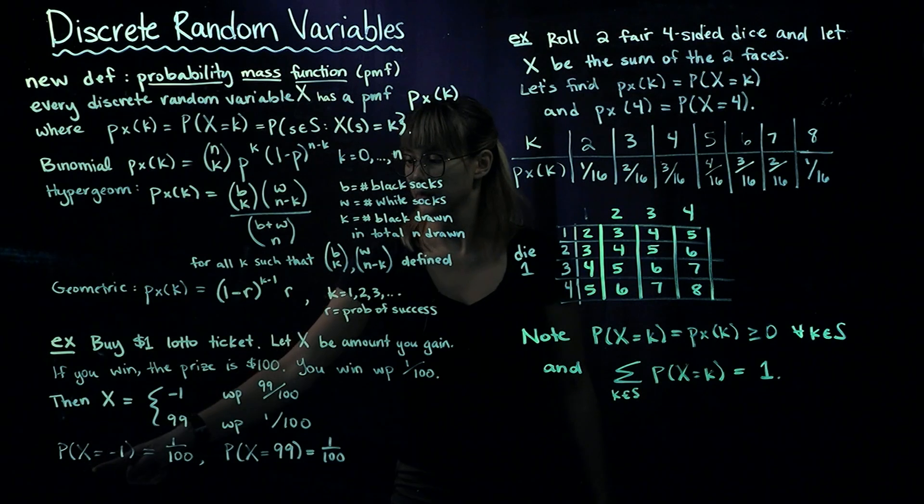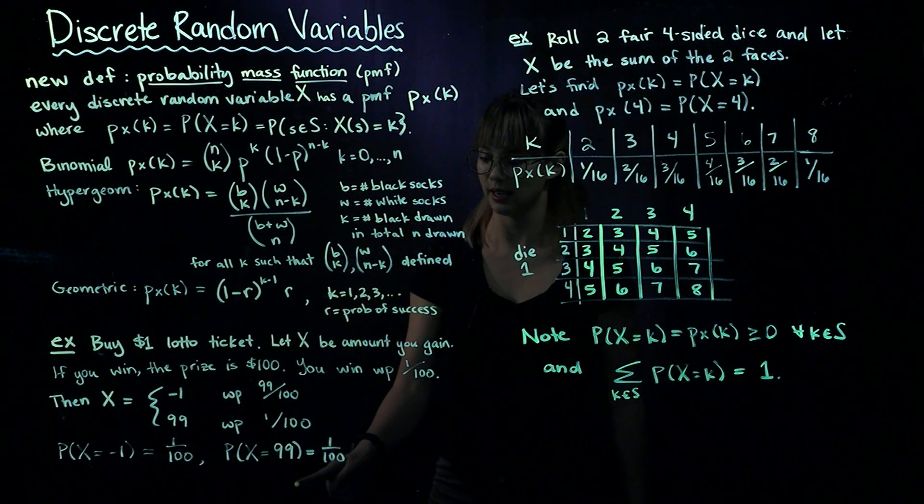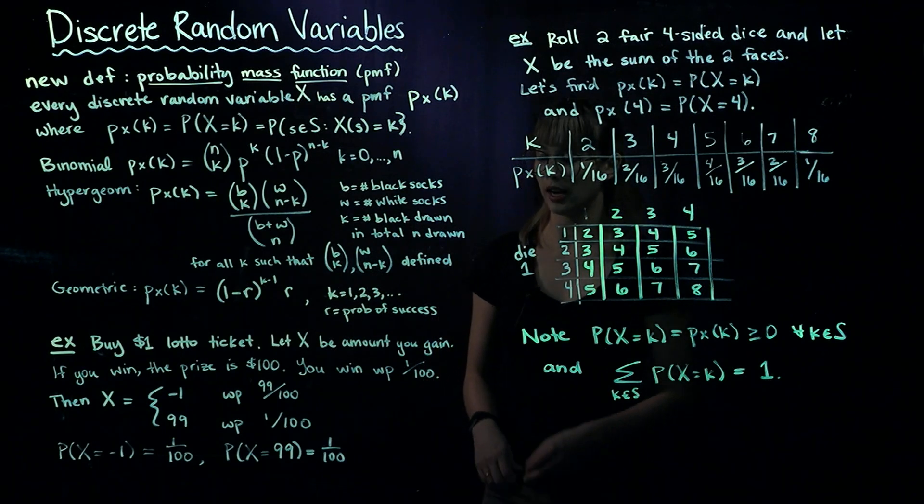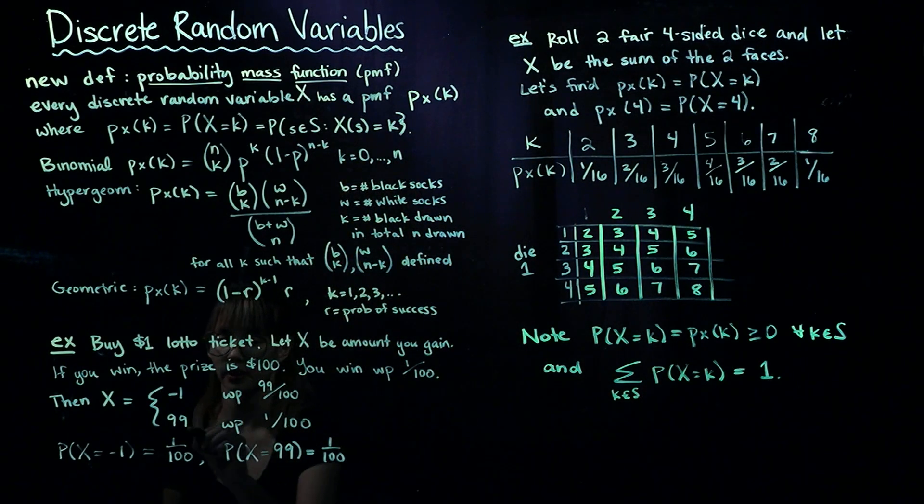Wait, the probability X equals negative one should be 99 out of 100, not 1 out of 100.